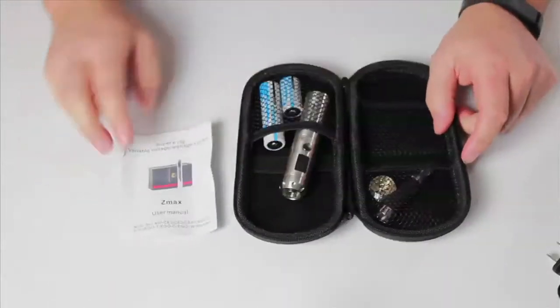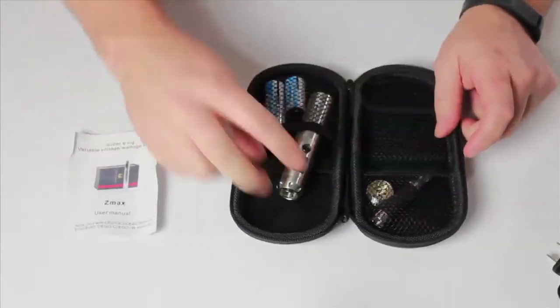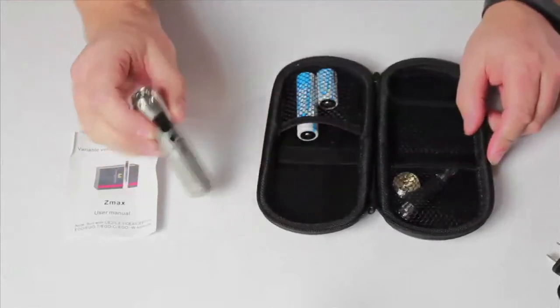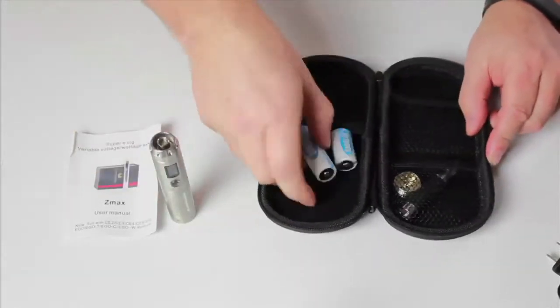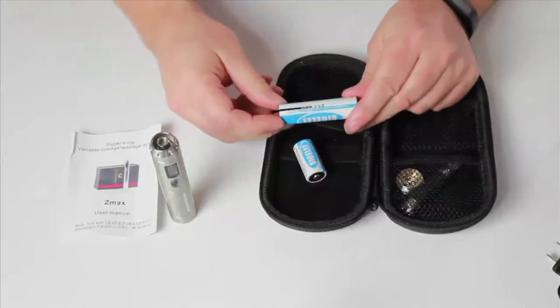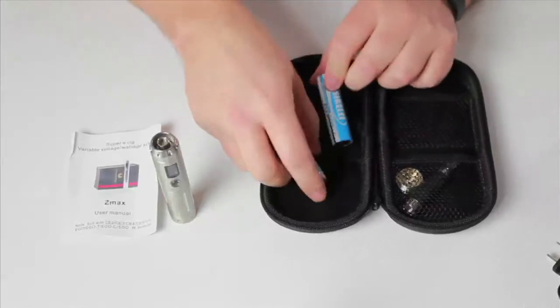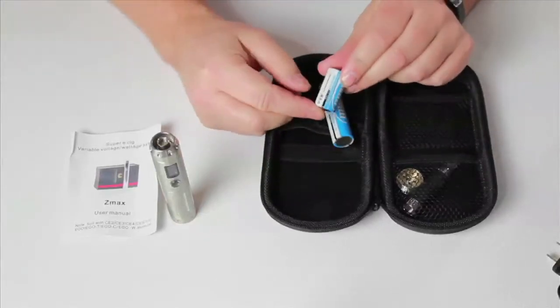First thing you'll notice, you have a user manual. You've got the mod itself, two batteries. It comes with an 18650, which is 2200 milliamps, and an 18350, which is 900 milliamps.